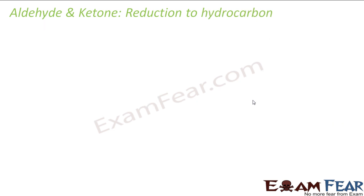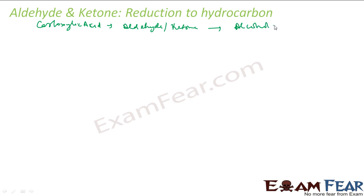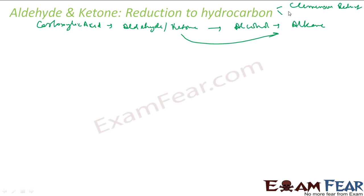Now let's see reduction of aldehydes and ketones to hydrocarbons. As discussed: carboxylic acid reduces to aldehyde or ketone, further reduces to alcohol, and further reduces to alkanes. There are two ways to do this: one is Clemmensen reduction and the other is Wolff-Kishner reduction.